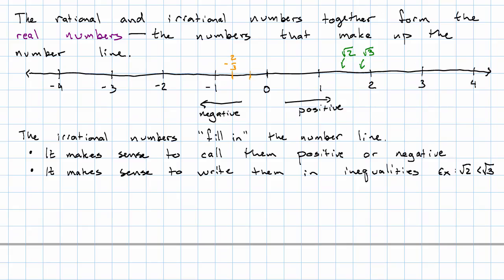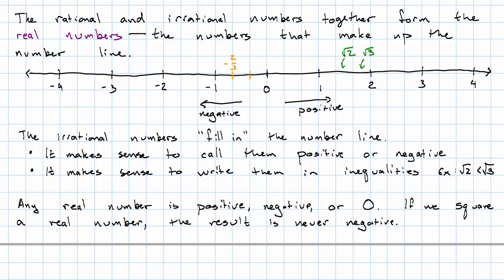And one of the things that we can say about the real numbers is, any real number, either it's over here to the right of 0 and it's positive, it's to the left of 0 and it's negative, or it's right at 0. If we square a real number, the result is never negative.